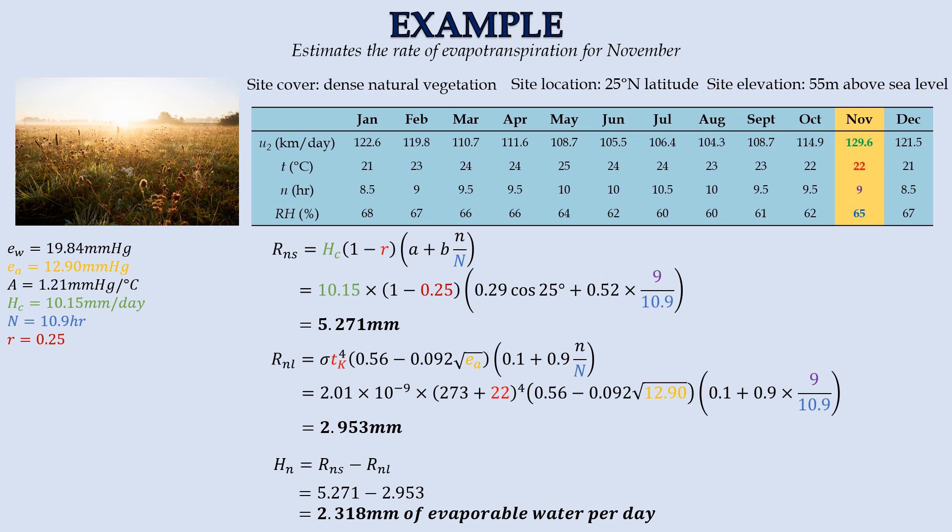Meanwhile, the back radiation equals to 2.953 mm per day. As a result, the net radiation will be 2.318 mm of evaporable water per day.